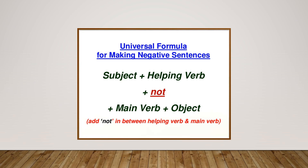There are some general rules for making negative sentences. First, the word NOT is placed between the helping verb and the main verb — this is a universal formula. For example, 'He is walking fast' is positive; 'is' is the helping verb and 'walking' is the main verb, so we add NOT between them: 'He is not walking fast.'